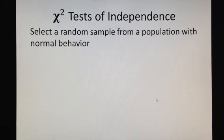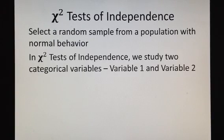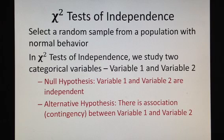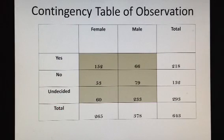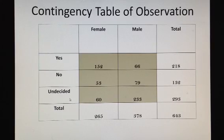Imagine that we are selecting a random sample from a population with normal behaviour. In the chi-square test of independence, we will study two categorical variables: Variable 1 and Variable 2. Our null hypothesis is that Variable 1 is independent from Variable 2, and our alternative hypothesis is that there is some sort of association or contingency between Variable 1 and Variable 2. We will calculate a contingency table — for example, using Gender and satisfaction from some product.